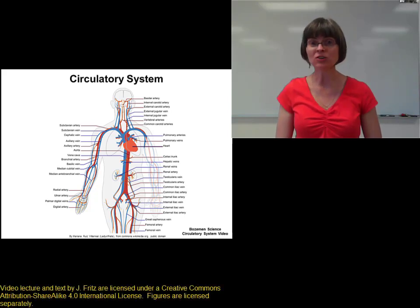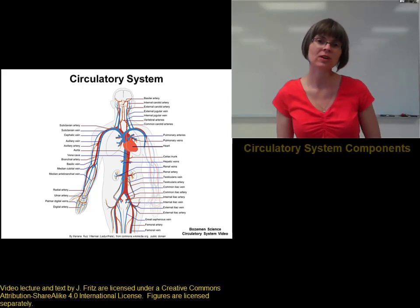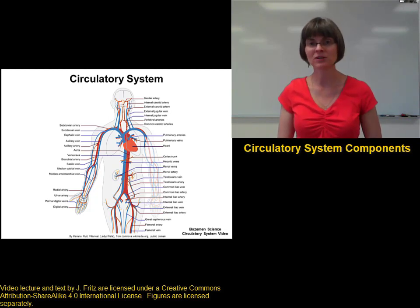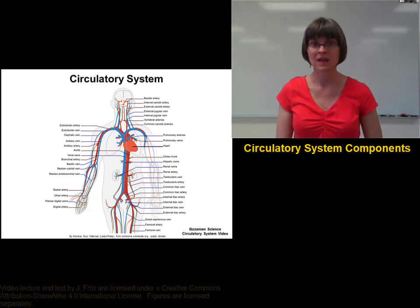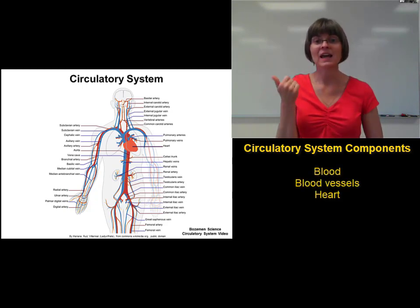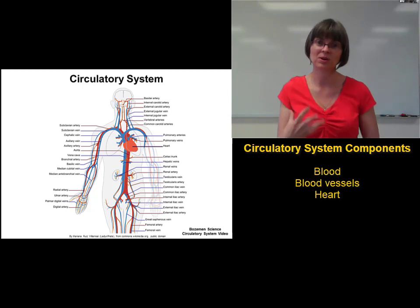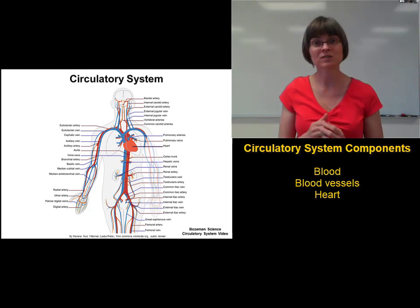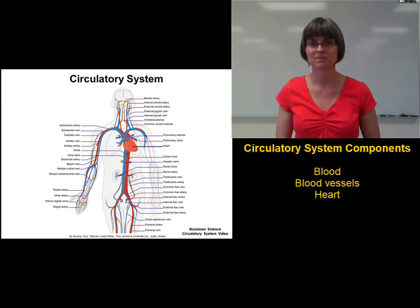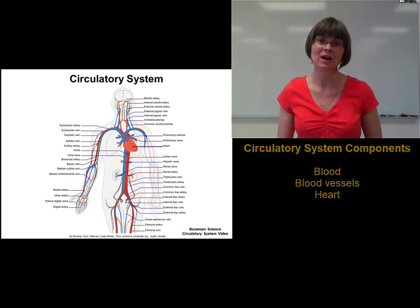Now that we've covered the functions of the circulatory system, let's take a closer look at the components. There are three main components to the circulatory system: the blood, the blood vessels which hold the blood, and the heart which moves the blood around. We're going to do a separate unit on each of those three components, and we're going to start with the blood.